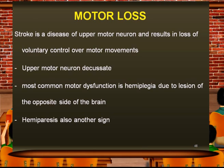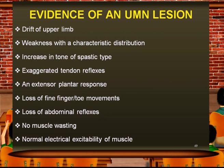Upper motor neuron lesions result in loss of voluntary control over motor movements. The most common motor dysfunction is hemiplegia, due to a lesion on the opposite side of the brain. Hemiparesis is also a sign — meaning weakness — while hemiplegia is total loss of function of a particular limb. Evidence of an upper motor neuron lesion may include drift of the upper limb, where flexors are more hyperfunctioning compared to extensors, and weakness with a characteristic distribution.